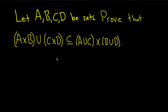Hello everyone. In this problem we have four sets A, B, C, and D, and we have to prove that this set is a subset of this set. So this cross notation — this is the Cartesian product of sets.